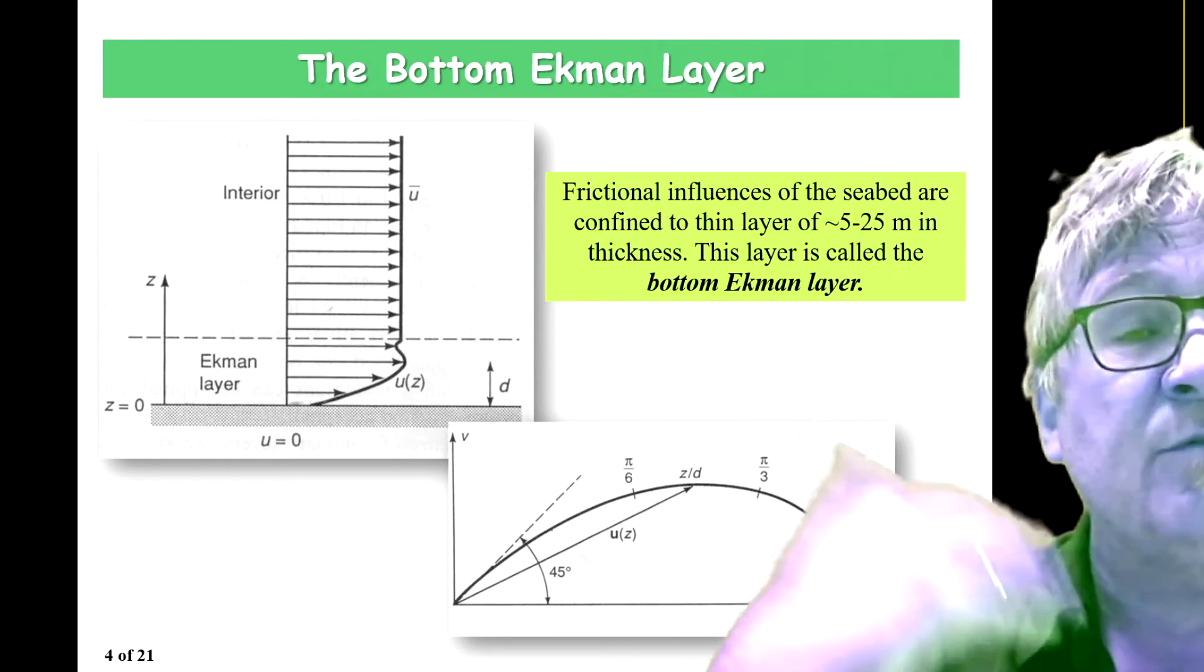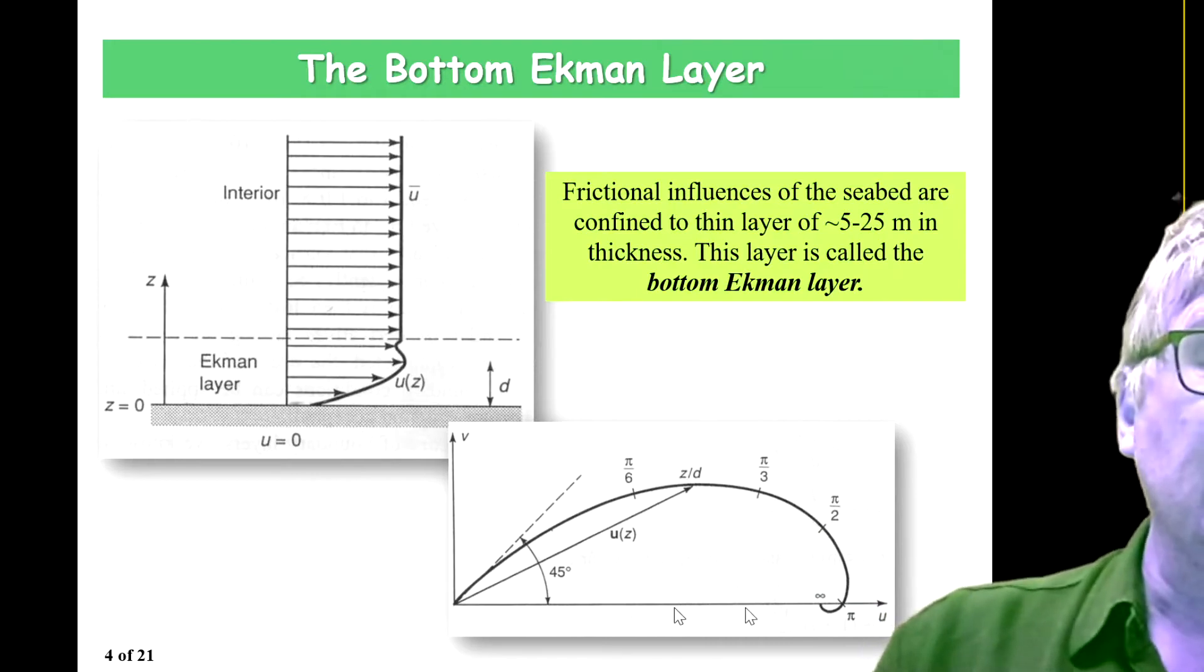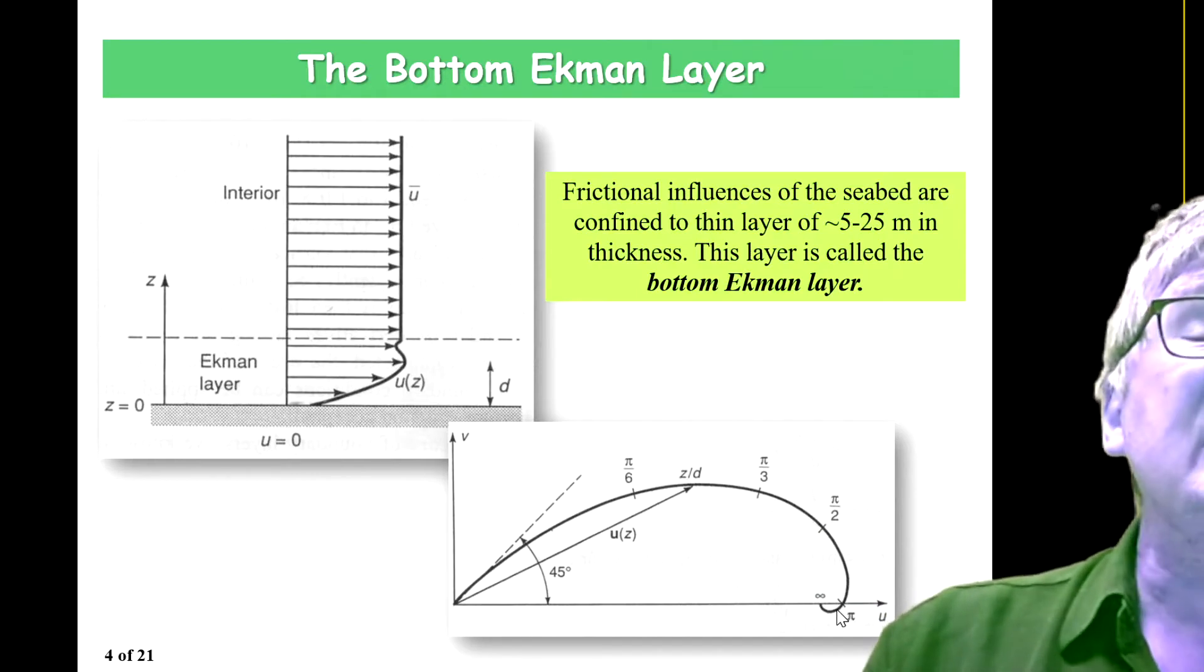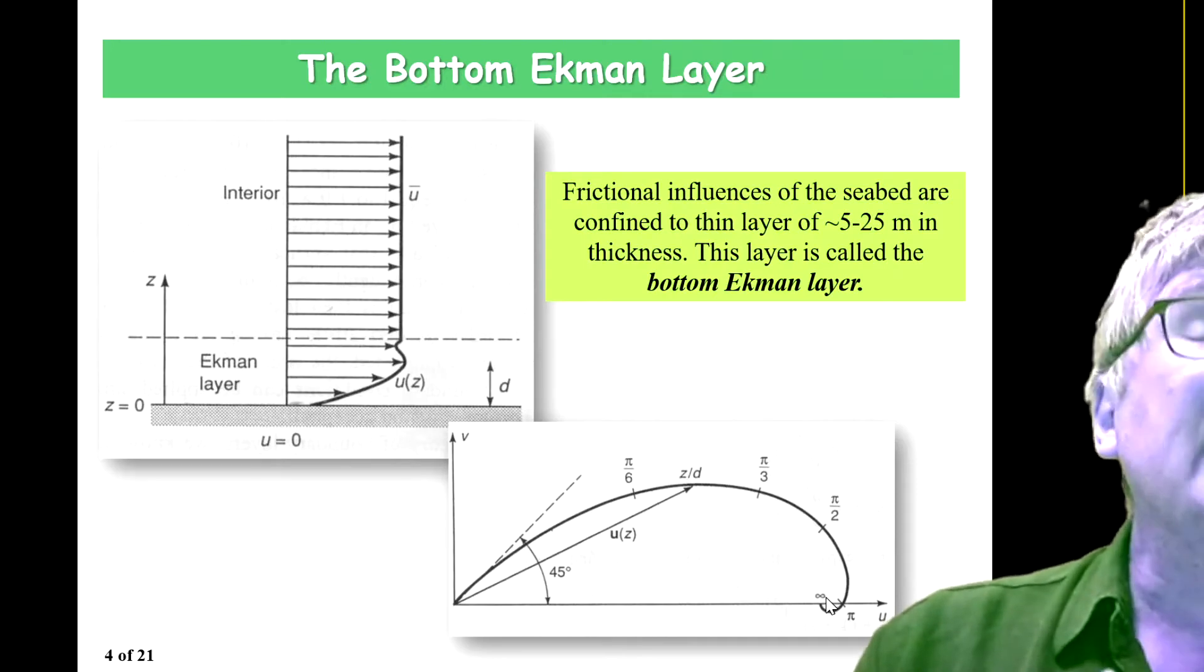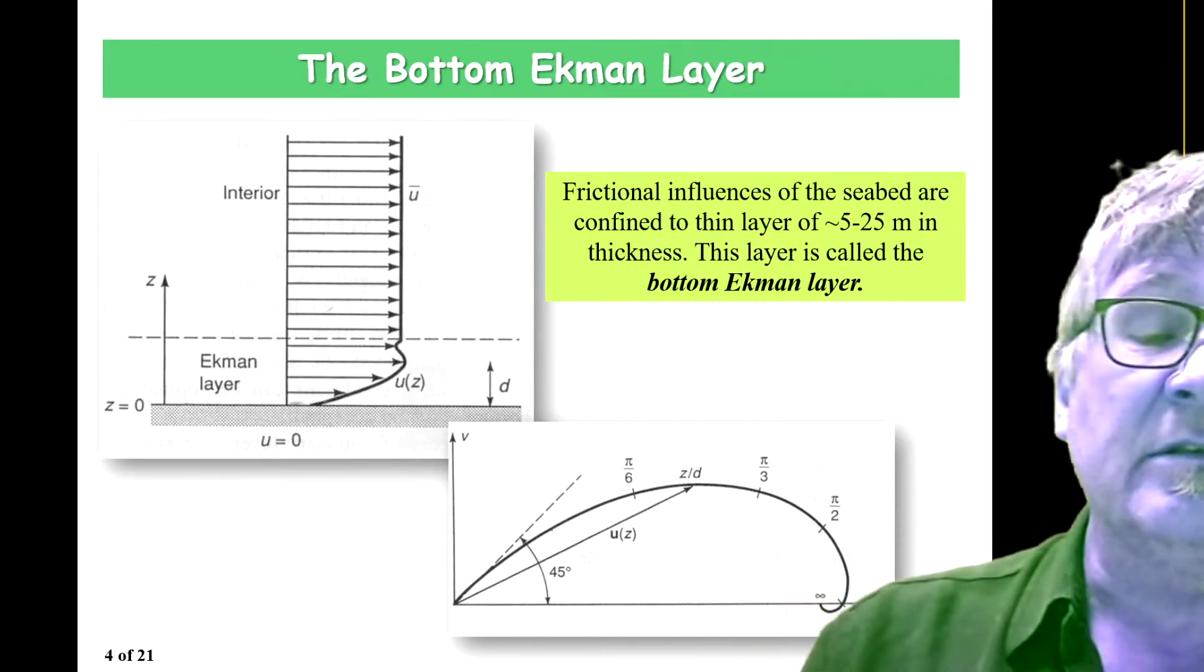So if you are above, say, 20 meters above the Ekman layer, you have a current that goes to the right here, to the east. And as you move now closer to the seafloor, this is for the northern hemisphere, this graph.